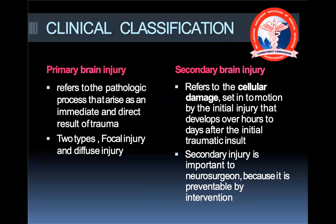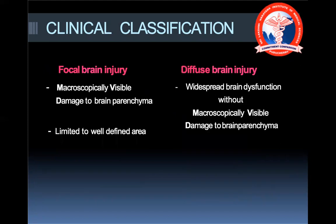On clinical classification, head injury can be classified as primary brain injury or secondary brain injury. Primary brain injury is direct and immediate at the time of injury and is of two types: focal and diffuse. Secondary brain injury is the injury which happens later because of cellular damage from the primary brain injury. Secondary brain injury is important to a neurosurgeon because it is preventable by intervention.